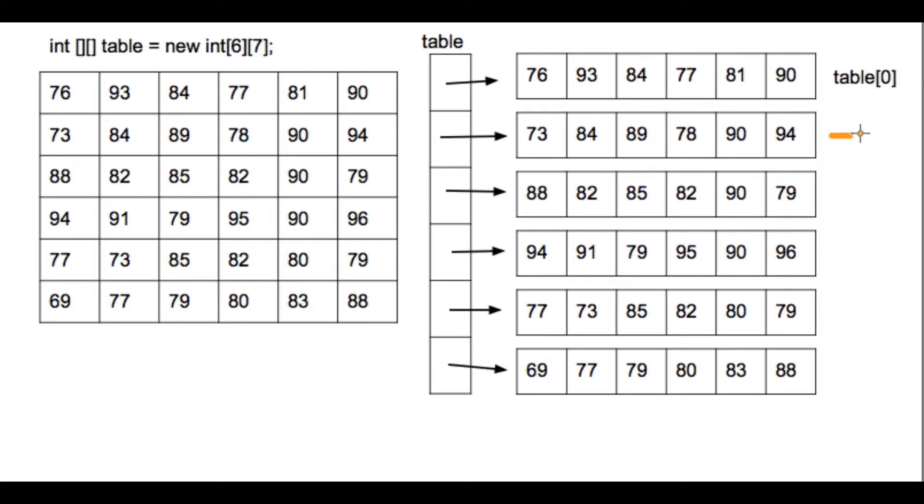to swap, say, this row with this row, what you're really doing is just swapping this reference with this reference. You need a temporary variable to hold the reference. But it's really an easy process if you understand that what's in a two-dimensional array is really just an array of arrays.